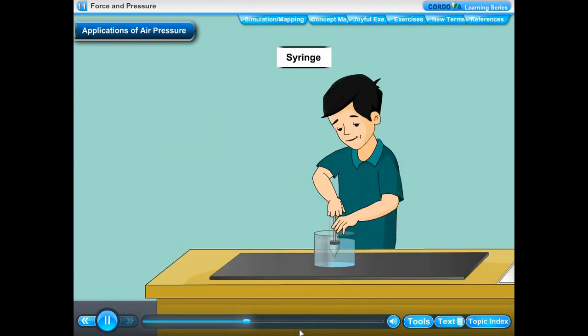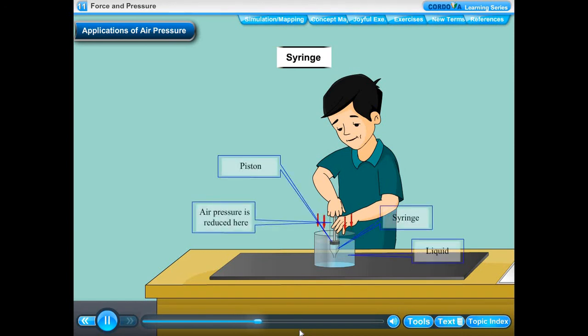Syringe. When the nozzle of a syringe is dipped in a liquid and its piston is withdrawn, the pressure inside the syringe is lowered. The greater atmospheric pressure acting on the surface of the liquid pushes the liquid up into the syringe.